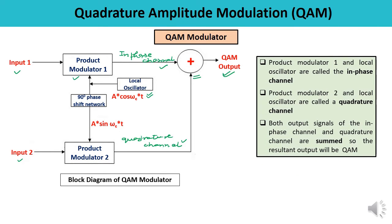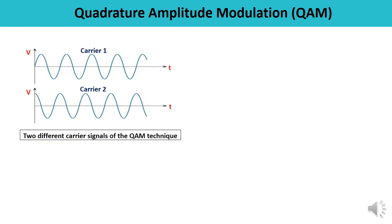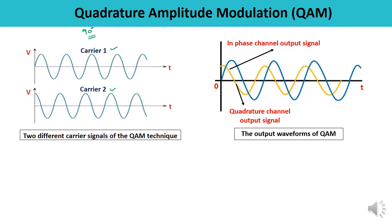There are two waveforms for the carrier: carrier one and carrier two. You can observe carrier one and carrier two, and there is a 90-degree phase shift between both carriers. The QAM output resultant waveform is of a particular nature. One is the in-phase channel output signal and the second is the quadrature channel output, and the resultant gives the QAM signal.